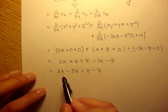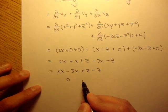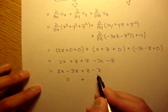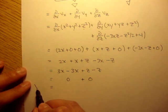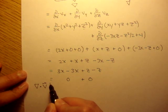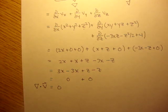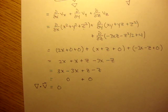And what do you know? 3x minus 3x is 0, plus z minus z is also 0. So we get our dilation rate, or our del dot v is equal to 0. Huh. That's strange. Del dot v is equal to 0.